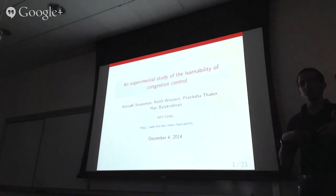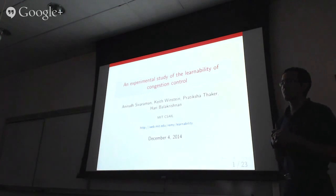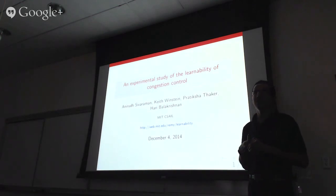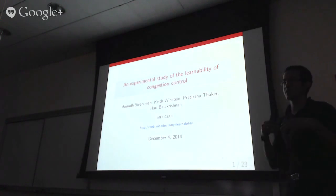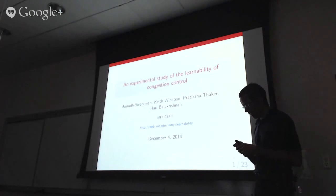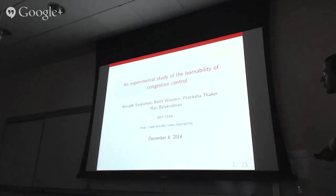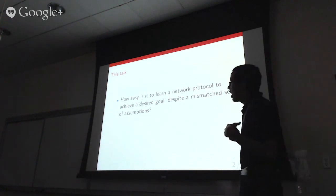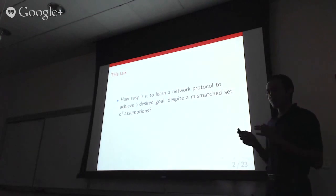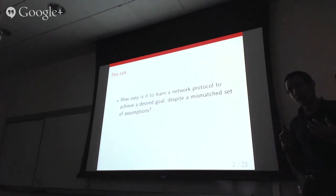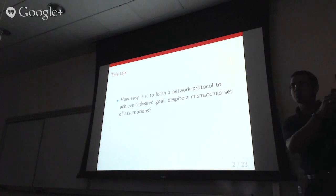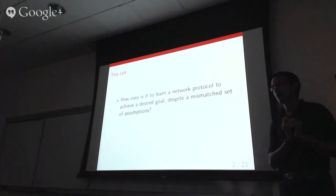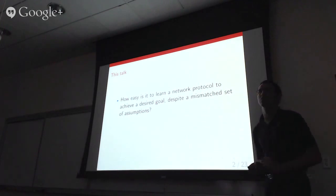The moral of the story is that despite the designer's best intentions, the protocols we've designed in the past latch on to certain assumptions about network conditions. So given that this seems to recur again and again, it seems worthwhile to pause and ask: can we rigorously quantify how easy it is to learn a network protocol to achieve a specific goal, knowing fully well that the designer will start with a mismatched set of assumptions — where the designer's assumptions at design time will necessarily differ from conditions encountered in practice?